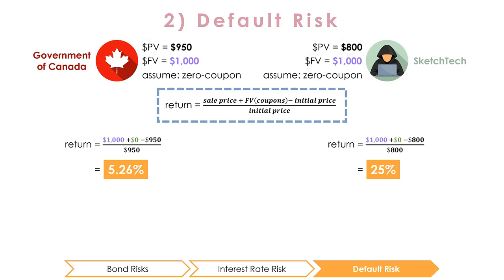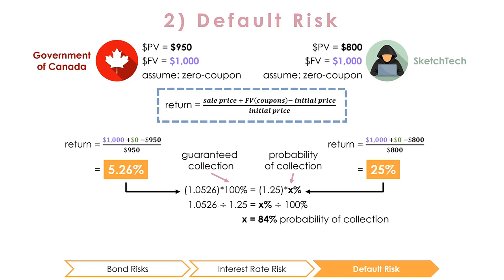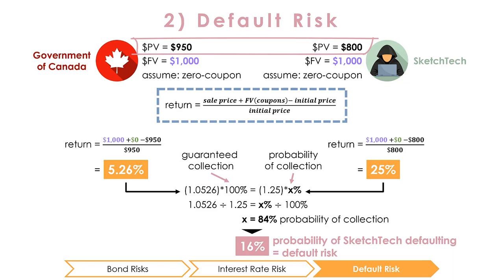To solve for the effective return on SketchTech bonds, we can set the returns on the two bonds equal. 1.0526 divided by 1.25 equals 0.84. Thus, there is an 84% chance of collecting on this bond. This means that the risk of default is 1 − 0.84, or 16%, assuming that we either collect all or none of the bond. Notice that the risk-free investment costs more than the risky investment because of the zero default risk. In reality, investors can earn an even higher return on risk than demonstrated, because they are risk-averse rather than risk-neutral, meaning they require an extra incentive to purchase a risky investment.